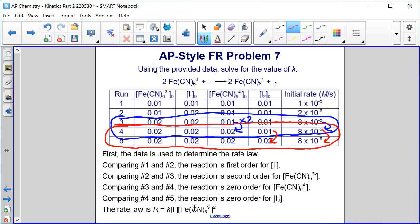So first order for I minus and second order for Fe(CN)6^3-. We can write our rate law as R = K[I-][Fe(CN)6^3-]^2.